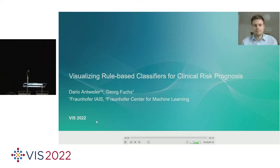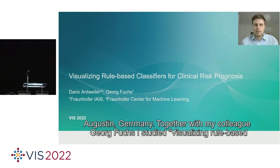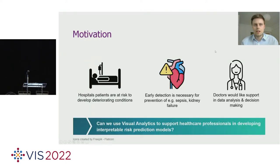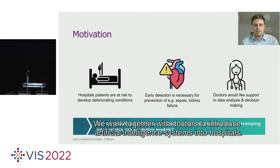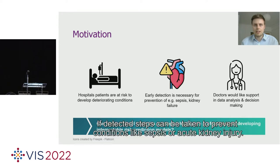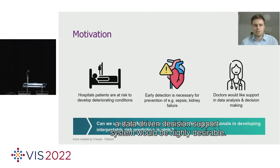Next up, we're going to have Daryl Antweiler talking about visualizing rule-based classifiers for clinical risk prognosis. It's a pre-recorded video. Hello everyone, my name is Daryl Antweiler. I'm with Fraunhofer IAS Research Institute in St. Augustin, Germany. Together with my colleague Georg Fuchs, I studied visualizing rule-based classifiers for clinical risk prognosis. We work together with doctors to introduce artificial intelligence systems into hospitals. One challenging task is the early detection of deteriorating conditions in hospital patients. Steps can be taken to prevent conditions like sepsis or acute kidney injury. Due to increasing patient numbers and availability of clinical data, a data-driven decision support system would be highly desirable.